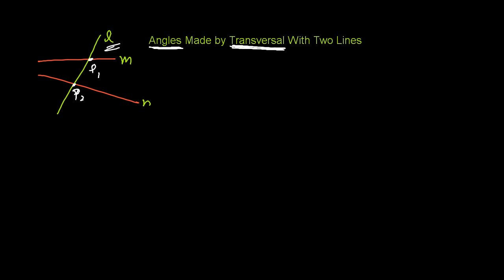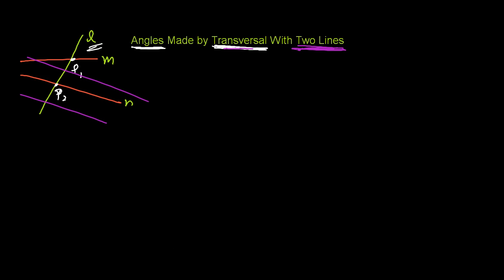And how are the angles formed when a transversal line intersects the two lines? A transversal can cut any number of lines, but we are going to learn the two-lines case and what kind of angles are formed and what names we give to those angles. When the two lines are parallel, there are very special cases that we'll be discussing in the next video. Here I just want to introduce the angles formed due to the transversal when it intersects two lines.